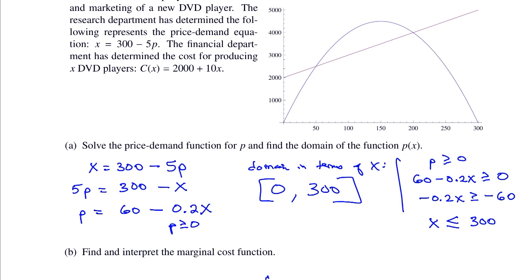The domain is 0 to 300. This means the price-demand function only works if you're selling between 0 and 300 DVD players. If you go beyond 300, the price goes negative, which isn't possible. You can also read the domain directly from the graph — 0 to 300.